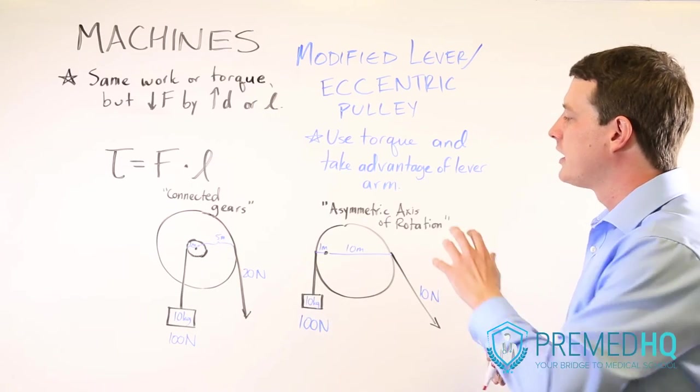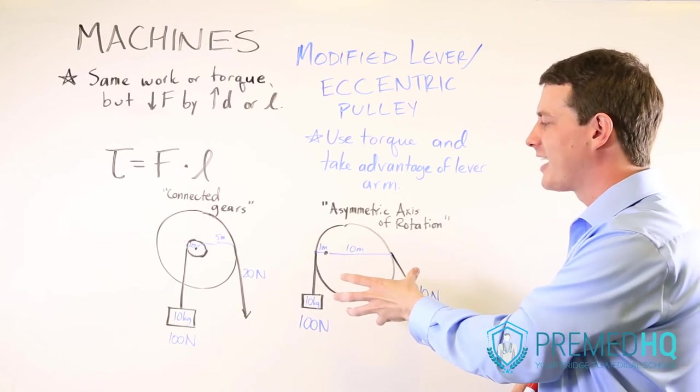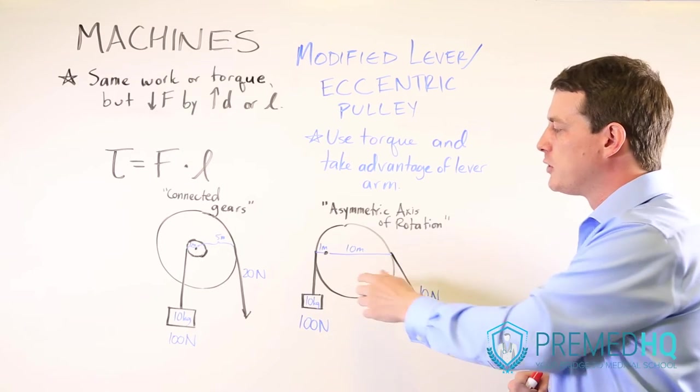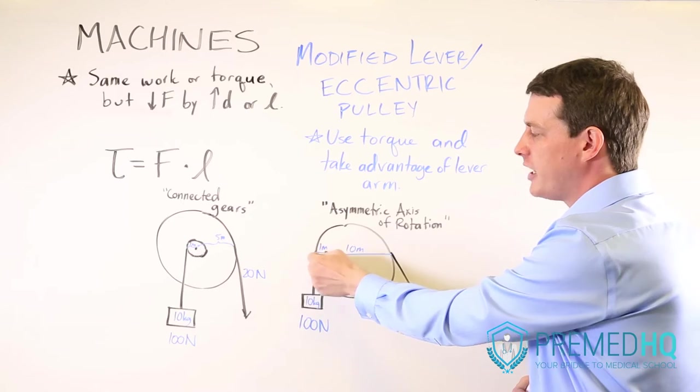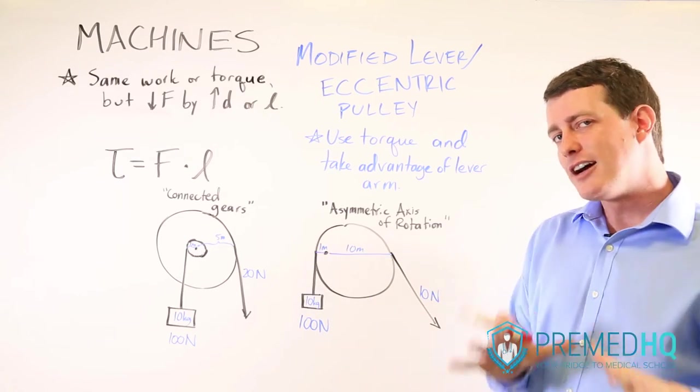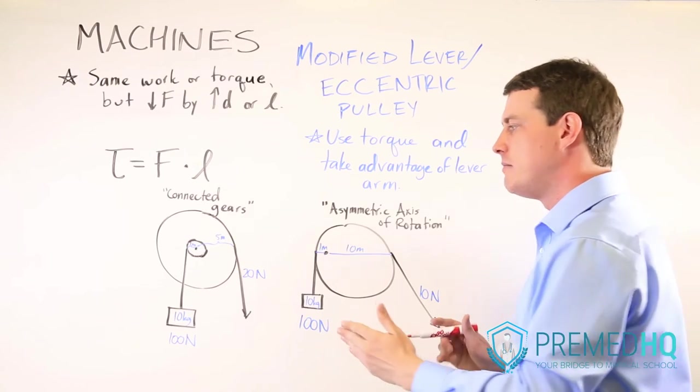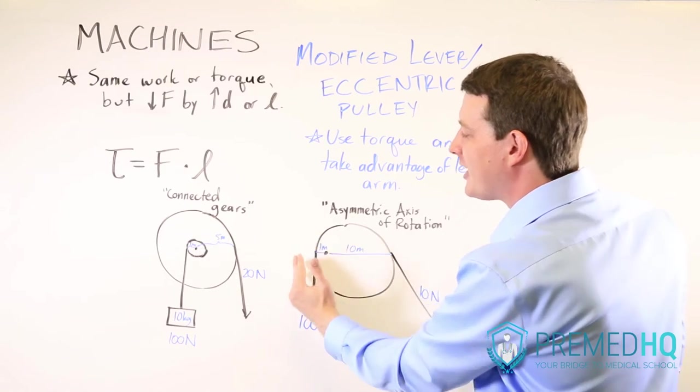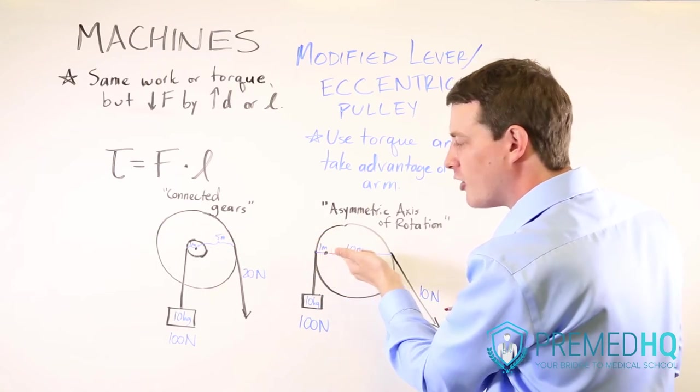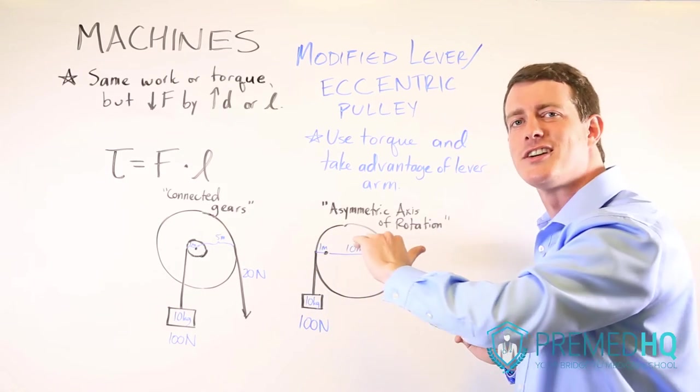Now when you're working with something with an asymmetric axis of rotation, it's very much the same type of principle. You look at the lever arm from the point of rotation to where the force is being applied. And remember that a lever arm is always going to be perpendicular to the actual force vector. So if this force is going up, the lever arm is going to be measured completely horizontally.